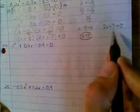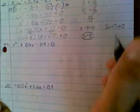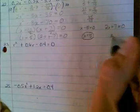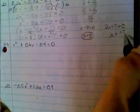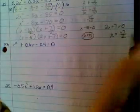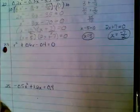2x plus 7 equals 0. And check this out. We're going to subtract 7 and divide by 2 in one step. So if I subtract 7, then divide by 2, then divide by 2. That's where I am. Negative 7 over 2.